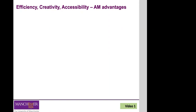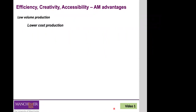Additive manufacturing in general presents several important advantages. One is low volume production — additive manufacturing can replace machine tooling, allowing for cheap low-volume production. This facilitates something very important we've discussed in earlier lectures: the ability to personalize and customize products according to customer requirements. This is not possible with conventional manufacturing because of the costs involved in tooling.